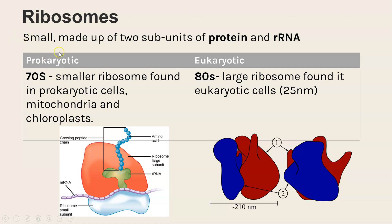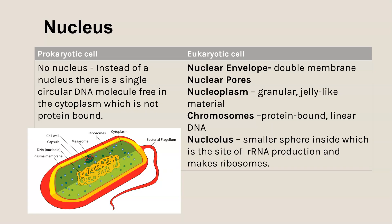The key difference is size: prokaryotic cells have 70S ribosomes, which are much smaller, while eukaryotic cells have 80S ribosomes. It's also worth noting that in eukaryotic cells, the mitochondria and chloroplasts actually contain some 70S ribosomes as well, so that those organelles can continually create their own proteins — generally enzymes for respiration and photosynthesis.